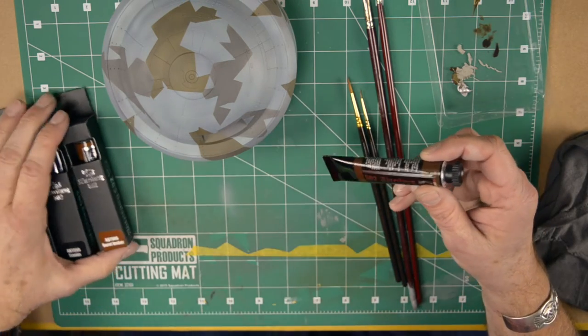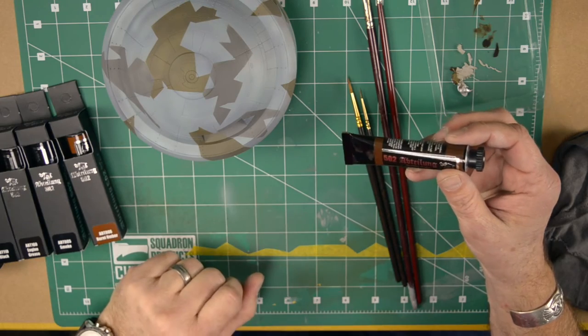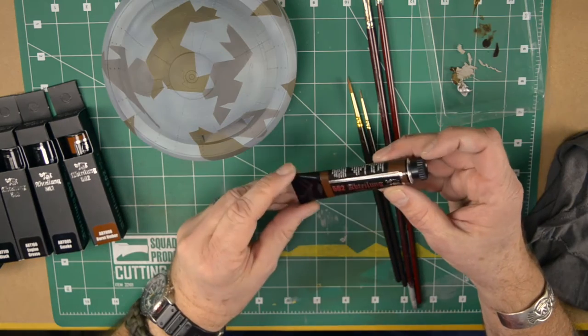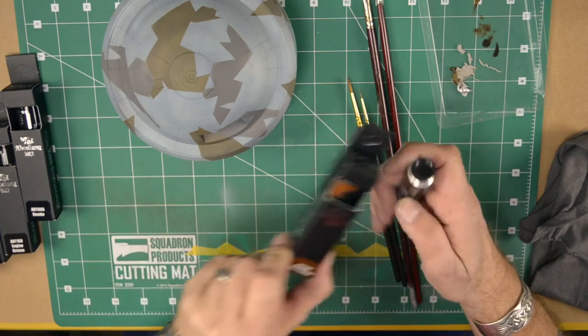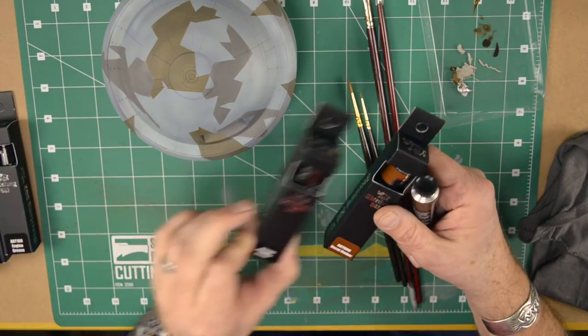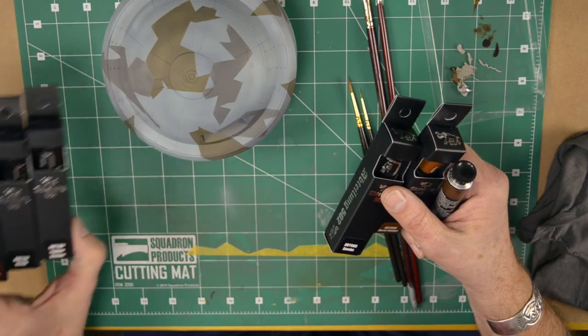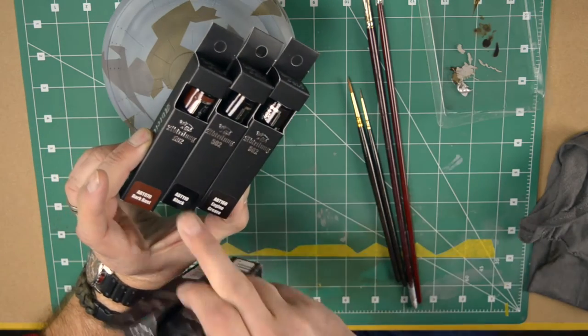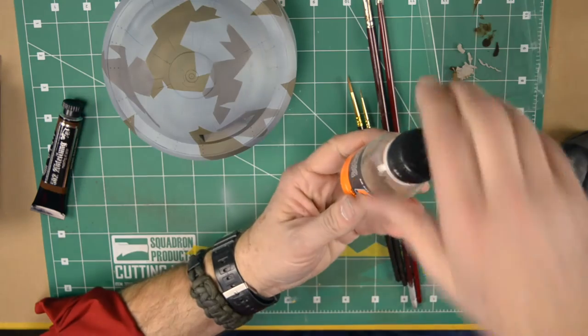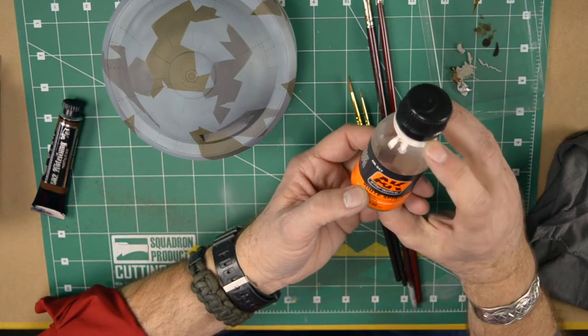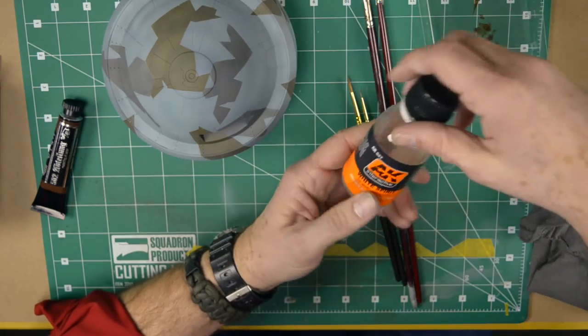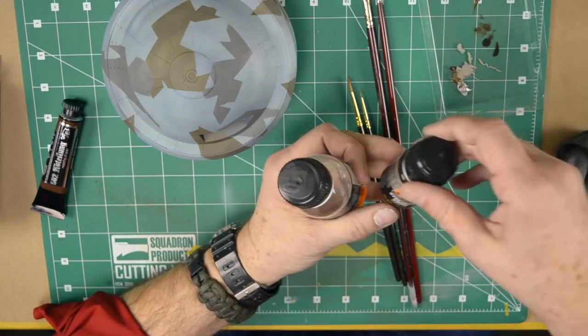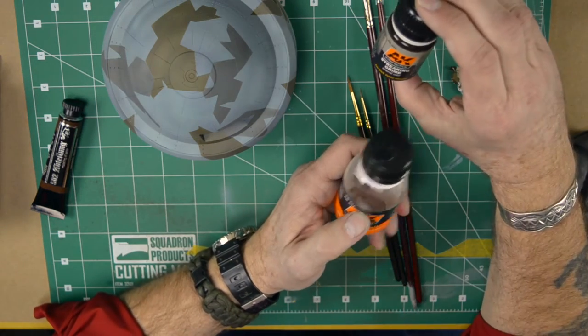I talked about the oil paints, Abteilung 502. The colors I use for weathering: my main color is raw umber, then burnt umber, smoke, engine grease, black, and dark rust. Those are my initial selection and the core of what I use for weathering.